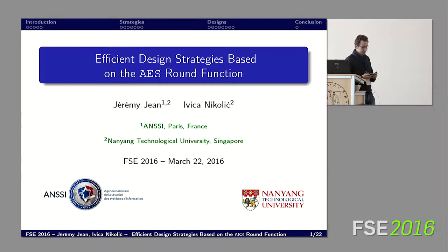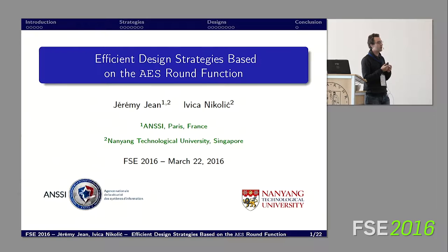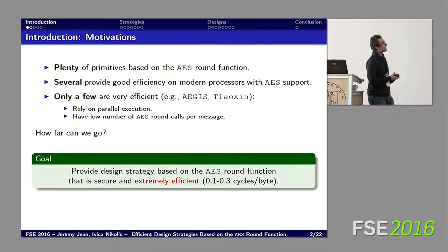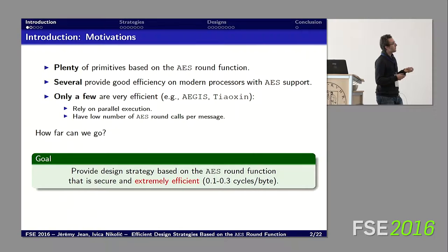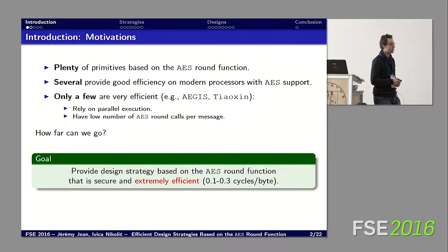Thank you for the introduction. This is a joint work with Ivica when I was at NTU. In this work we're interested in design strategies that we can achieve based on the AES hardware instructions available on most modern processors. The motivation starts by observing that there are many designs recently proposed and accepted to crypto conferences which are based on the AES round function, and many of them provide very good efficiencies on modern processors. Among them, two stand out: Aegis and Tiaoxing, which are currently submitted to the CAESAR competition and receive very efficient performances.